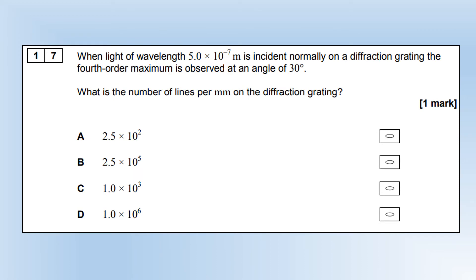When light of wavelength 5 times 10 to the minus 7 is incident normally on a diffraction grating, the fourth order maximum is observed at an angle of 30 degrees. What is the number of lines per millimeter on the diffraction grating? I started with the standard diffraction grating equation and substituted D equals 1 over N, where N is the number of lines per meter. Solved what N was by plugging in the numbers to get lines per meter, divided by 1000 to get lines per millimeter, which is option A.